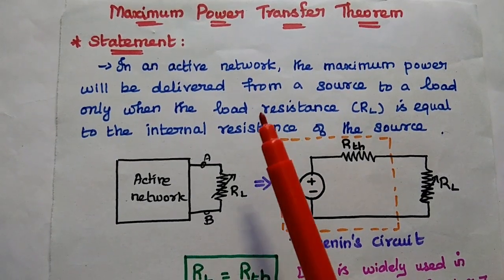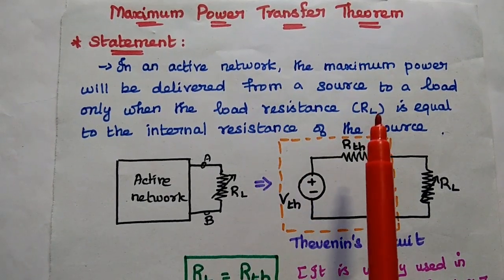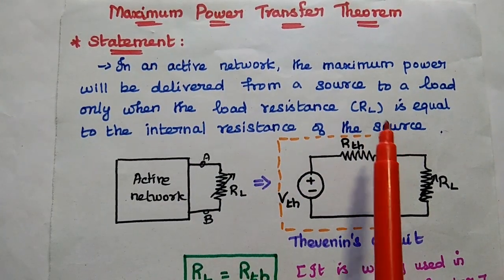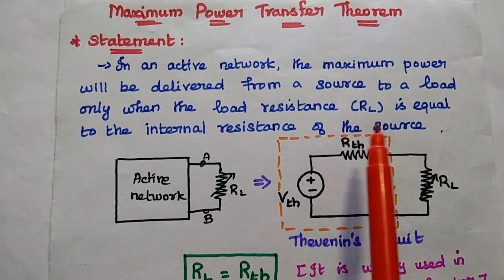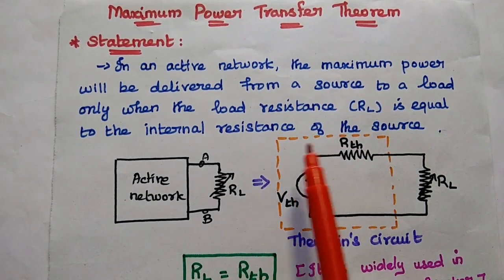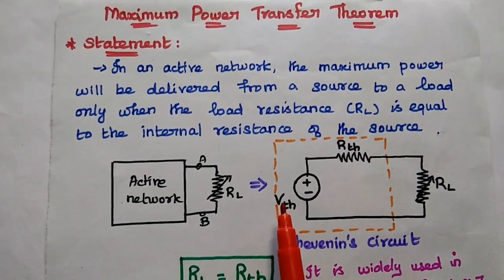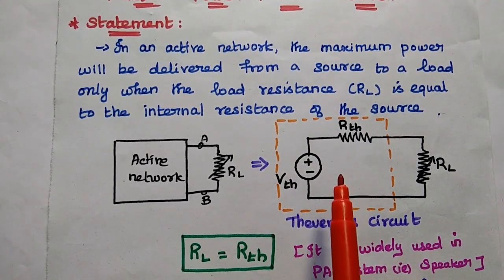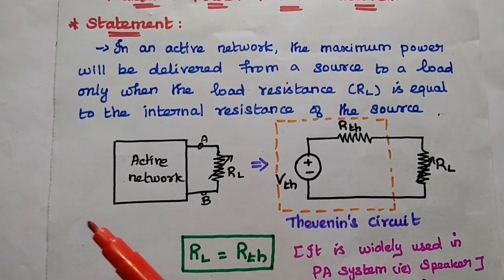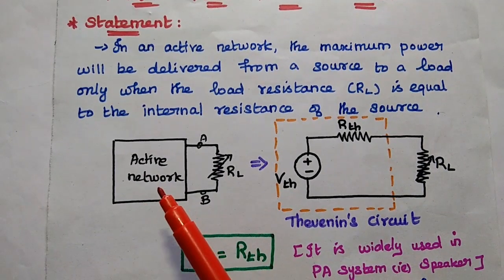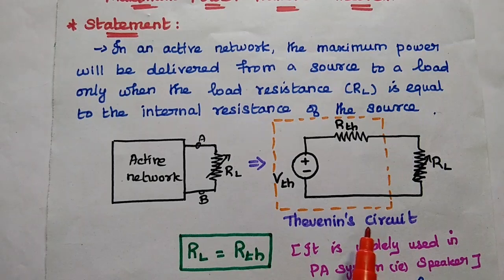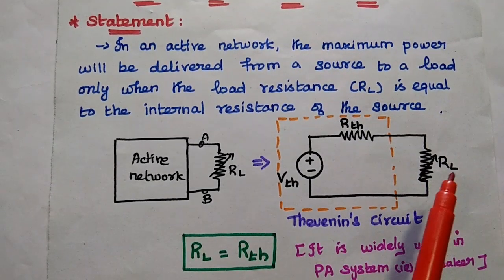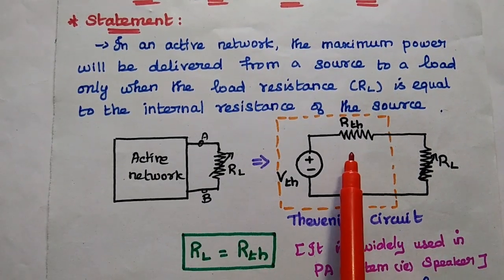So the statement is: in an active network, the maximum power will be delivered from a source to a load only when the load resistance is equal to the internal resistance of the source. The internal resistance can be obtained by using the Thevenin's equivalent circuit. Any electric circuit can be simplified using the Thevenin's equivalent circuit and then set RL equal to the Thevenin's resistance.